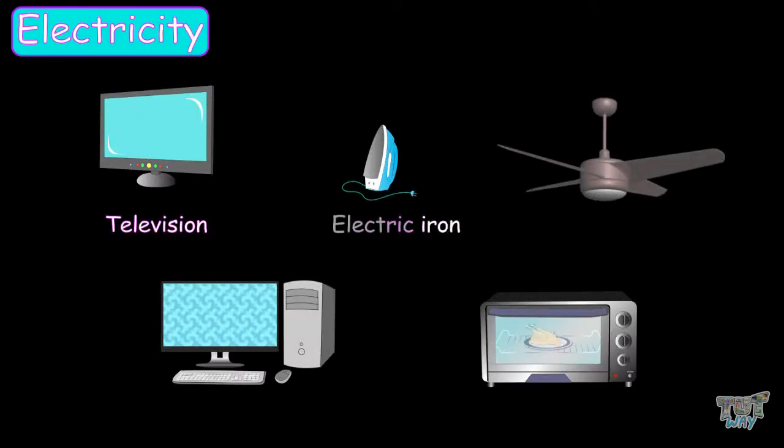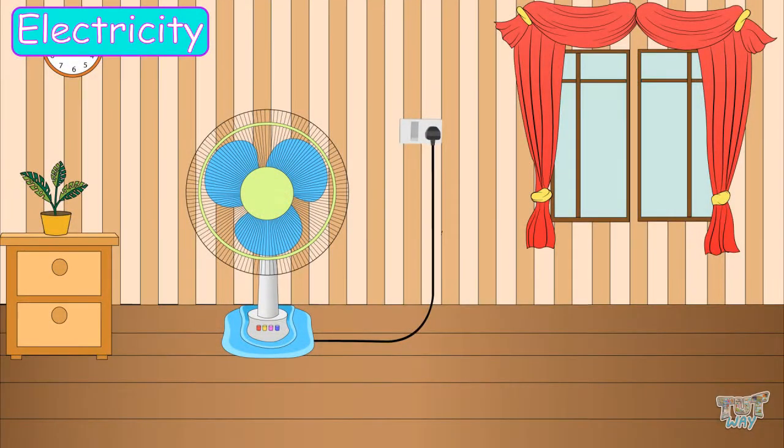All the appliances, like television, electric iron, ceiling fan, computer, oven, all of these need electric energy in order to run. And you put their wire into the socket to turn them on, so that they get electrical energy.